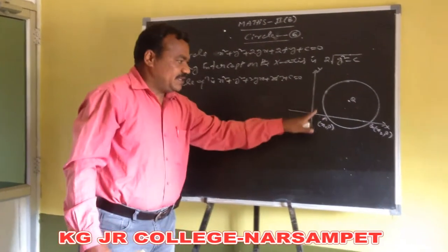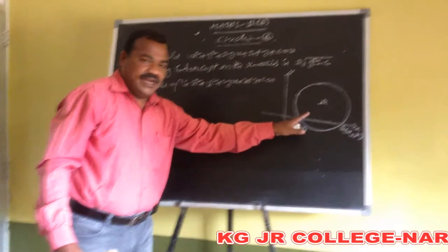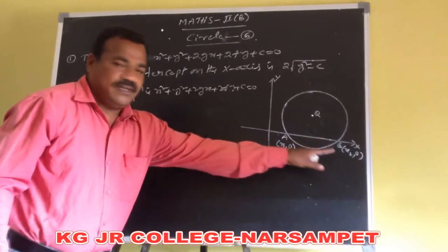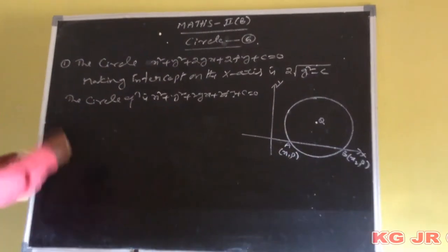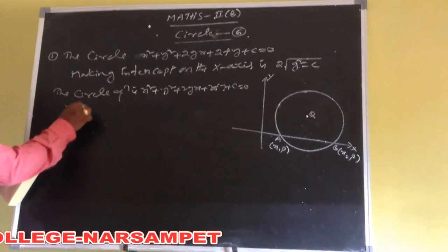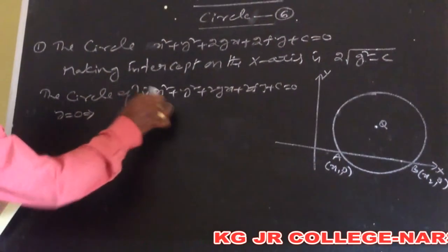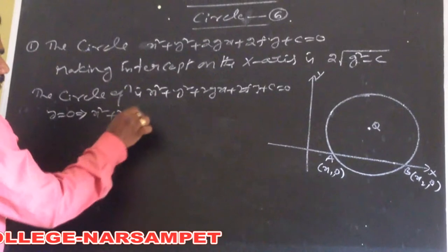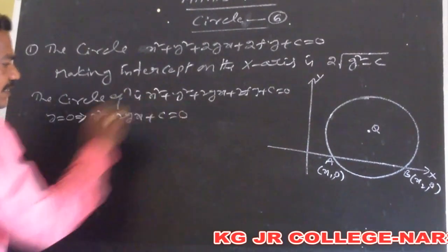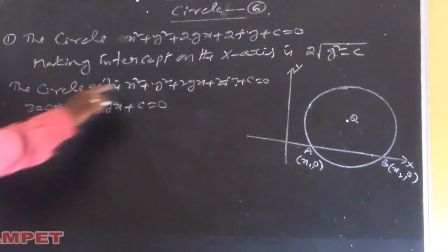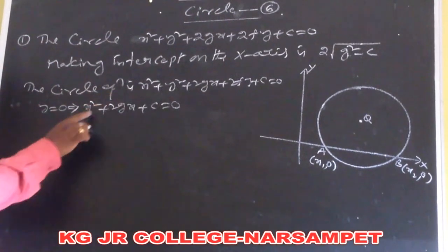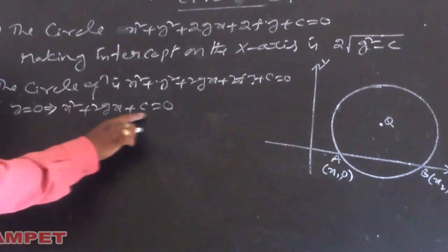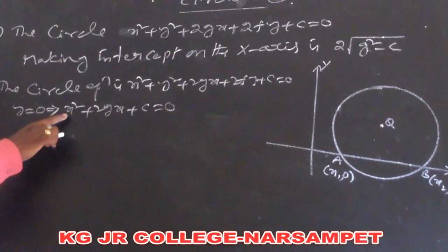This circle cuts the x-axis at a and b. At these points, the y coordinates are 0. So, putting y equal to 0 in this equation, the equation becomes x square plus 2gx plus c is equal to 0.